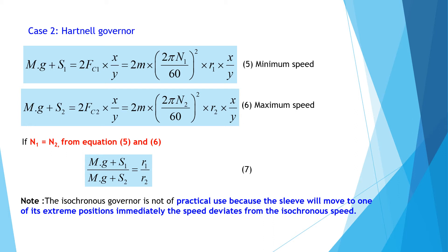If N1 equals N2, then equating equations 5 and 6, dividing equation 5 by equation 6, we get equation 7: (Mg + S1) / (Mg + S2) = r1 / r2. This is the ideal case of the synchronous Hartner governor. However, the synchronous governor is not of practical use because the sleeve will move to one of its extreme positions immediately when the speed deviates from the synchronous speed.